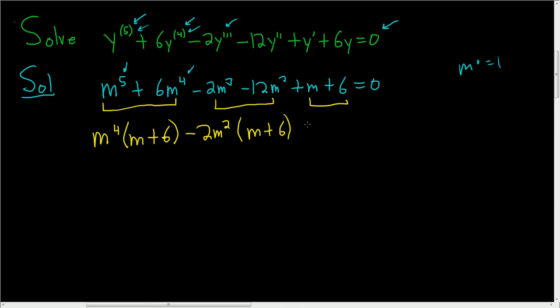So hopefully we get m plus 6's everywhere else. So here we can pull out a negative 2m squared, and again we're left with m plus 6, success. And here we can pull out a 1, so plus 1, and then m plus 6. So now we'll factor out m plus 6, where we're going to pull this out. And I'll factor it out, and I'll write it on the right-hand side. So it's going to be m to the fourth minus 2m squared plus 1, all being multiplied on the right by m plus 6. And this is equal to 0.